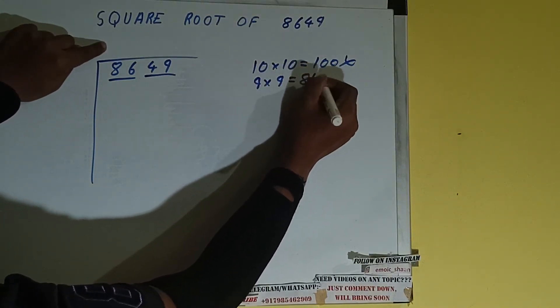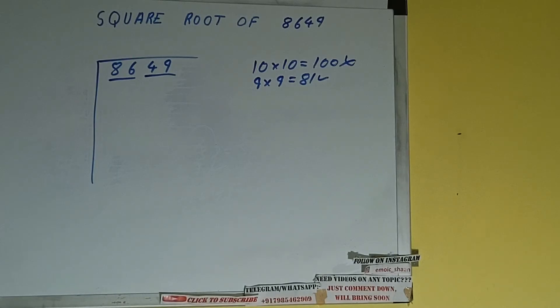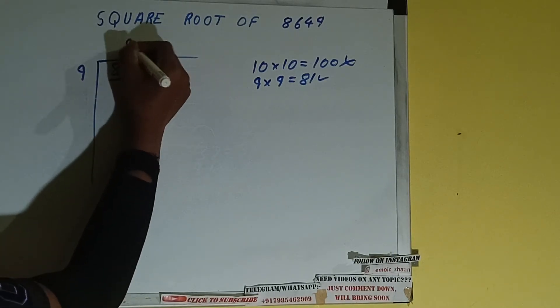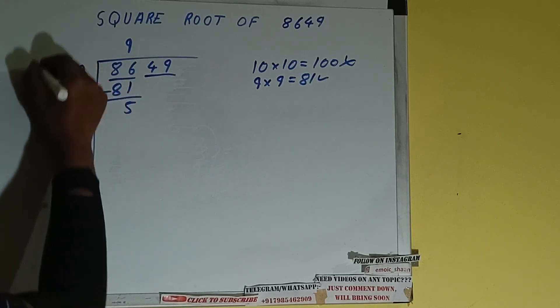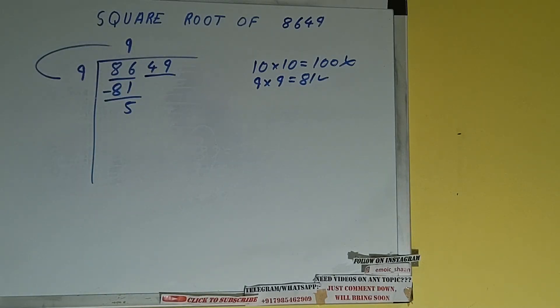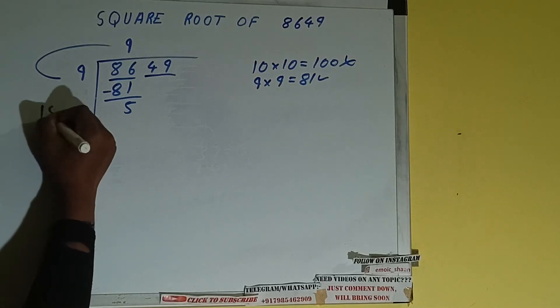If we write 9 here and 9 here, it will be 81 which is good to take. So 9 here and 9 here: 81. Subtract, 5 will be left. We did 9 into 9, so add both. So 9 plus 9 will be 18. Write it here.